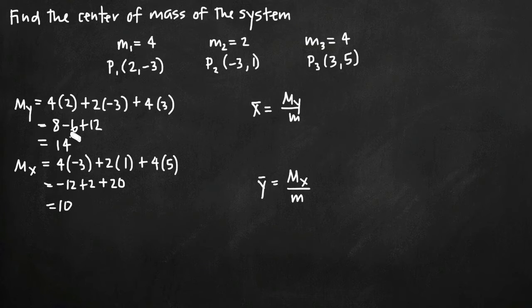Now once you've found the moments of the system, to find the x value in the coordinate point of the center of mass of the system, we're going to take m_y and we're going to divide it by total mass.